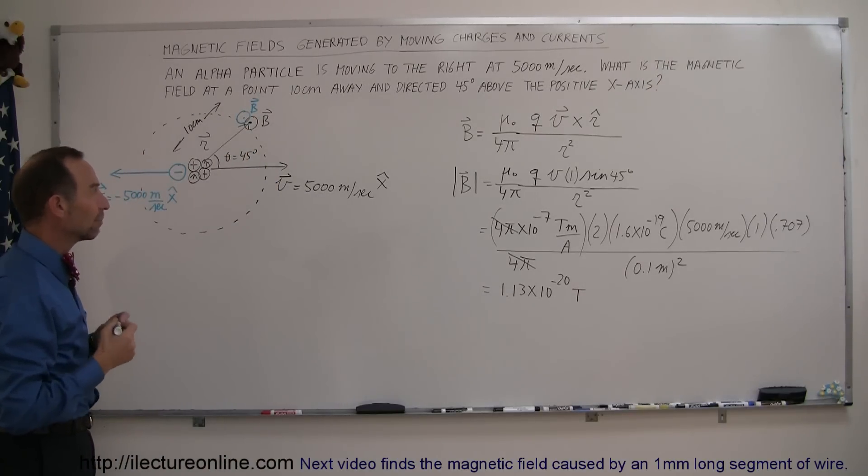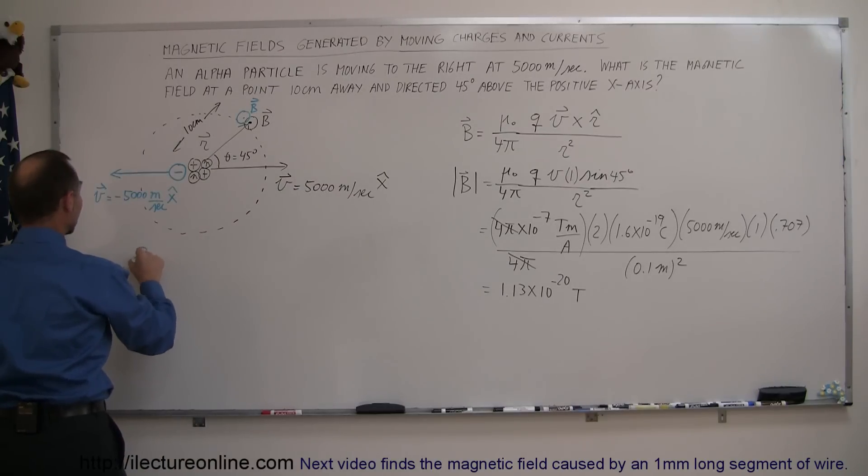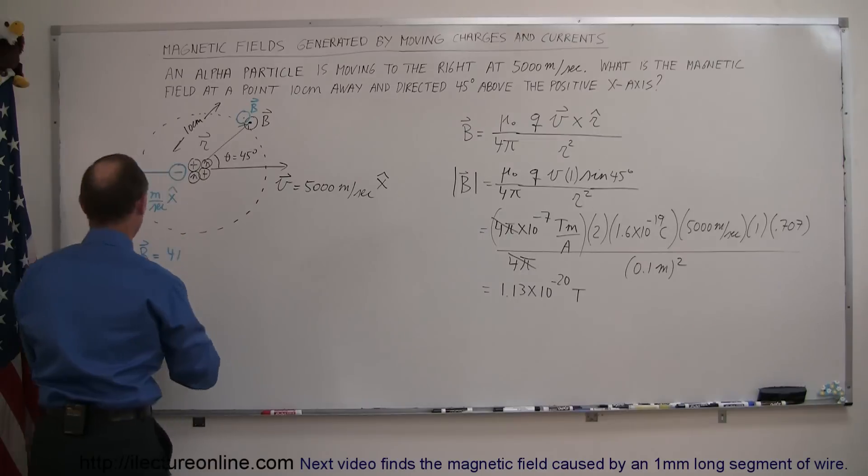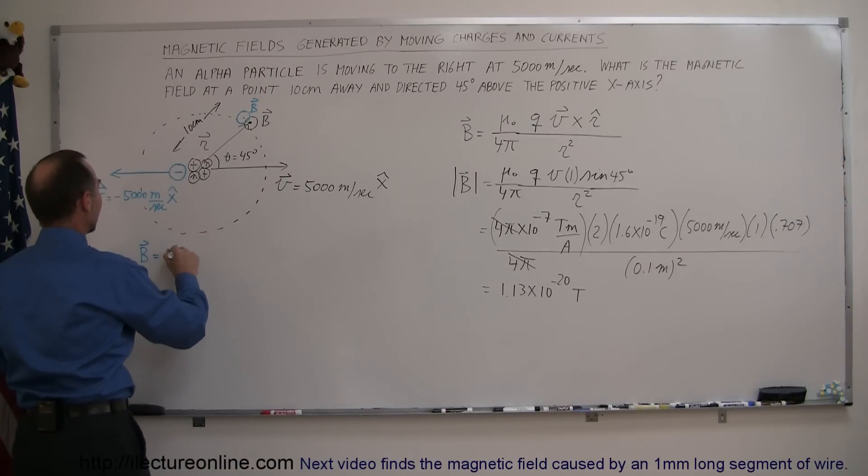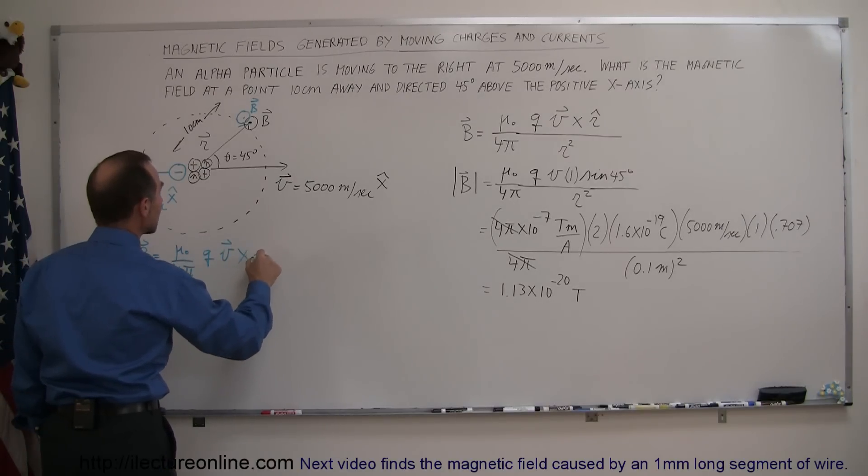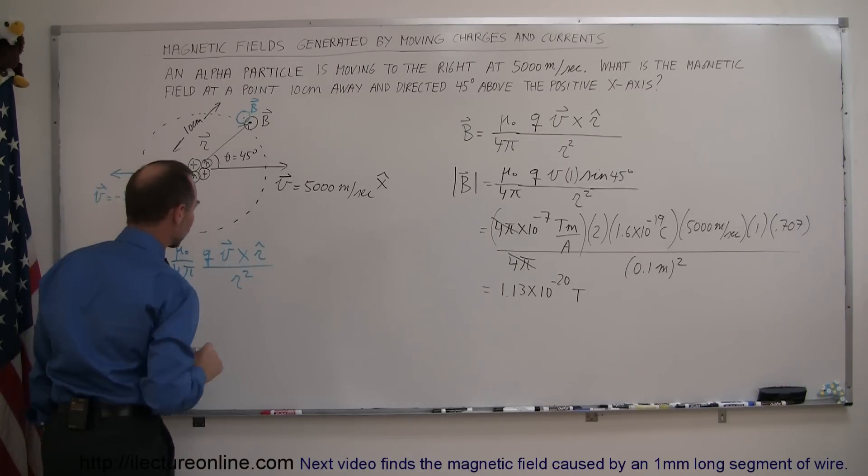What about the magnitude of that B field? Well it turns out that we use the very same equation, the B field is equal to, not 4 pi, it's mu sub nought divided by 4 pi, so mu sub nought divided by 4 pi times the charge of that particle times the velocity of that particle multiplied or crossed with the unit vector, pointing in that direction, divided by the magnitude of the unit vector squared.